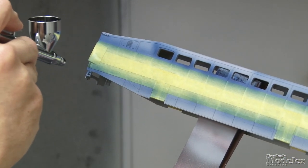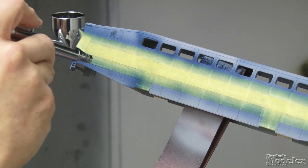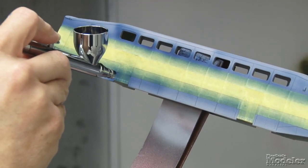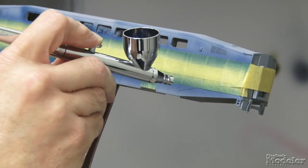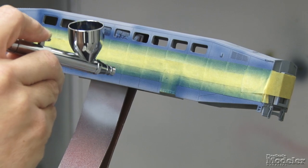So we're just going to build it up slowly, particularly starting along the edges of those masks. You don't want to try and do this all in one pass, just like with any airbrushing.